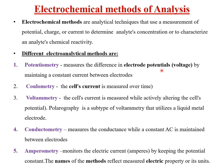Potentiometry measures the difference in electrode potential, or voltage, by maintaining a constant current between the electrodes. In coulometry, we measure the cell's current over time. In voltammetry, the cell's current is measured while actively altering the cell's potential — we apply voltage at different rates and measure the current.